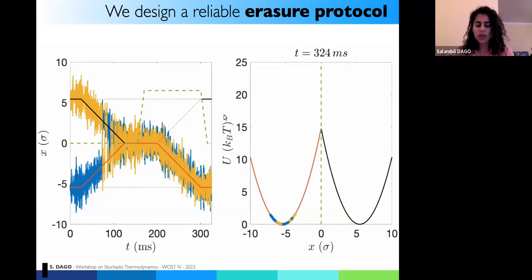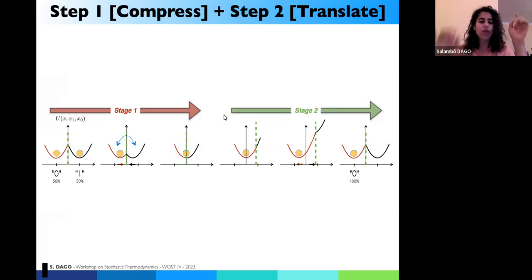Just so that we speak the same language. The first stage when I merge the wells together, I will call it compression because we are compressing the phase space. We are forcing the system to go from two states to only one. And then I just translate my system to state zero to then again build my memory. And this is called stage two. And you will see in the following, it has very different description.